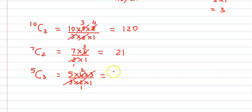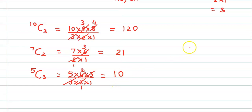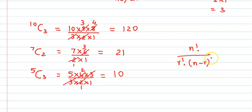So this was something basic about combination. Combination deals with selection and the order of selection does not matter. The formula to remember is nCr = n factorial upon r factorial into n minus r factorial, where r is less than or equal to n. Thank you.